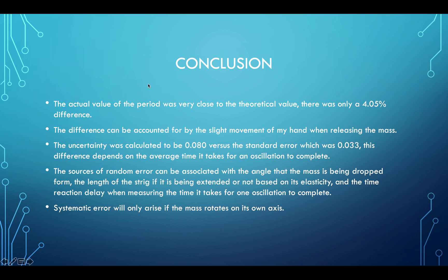To conclude, the actual value of the period was very close to the theoretical one that we calculated. The only difference was around 4.05%, which can be taken into account. This difference can be linked back to the slight movement of my hand when I was releasing the mass. It might have went up or down plus or minus one degree, which stayed below 10 degrees at all times. The uncertainty that was calculated to be 0.08 versus the standard error of 0.033—this difference depends on the average time it takes for an oscillation to fully complete.